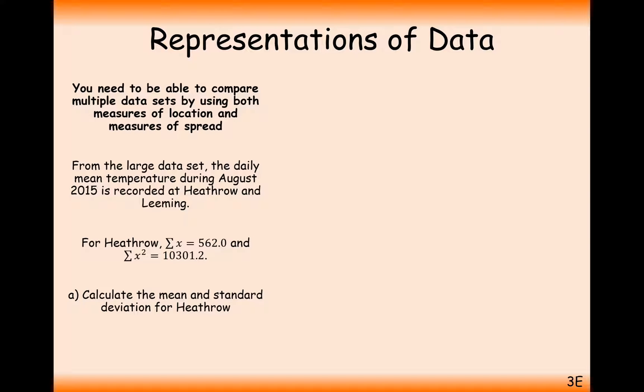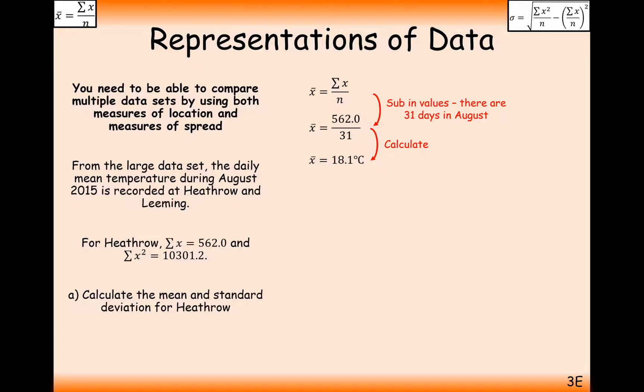Calculate the mean and the standard deviation for Heathrow. Well, let's just remember those formulas then. So the mean x bar is the sum of x divided by n, adding up all your data and divide by how many there are. Get your calculator out, and you get 18.1 Celsius.